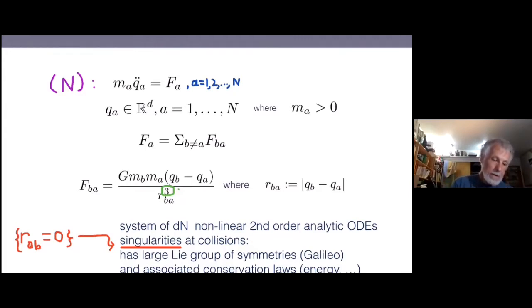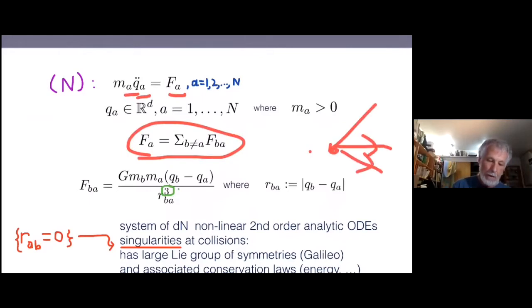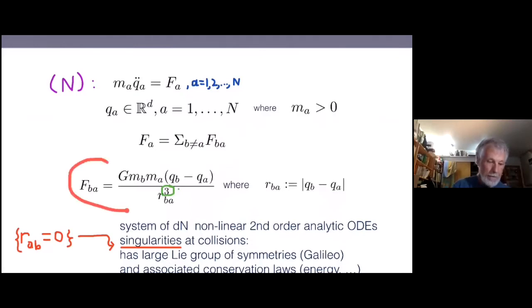Okay, so here are the equations. And this is also telling you my notation. I have positions of masses QA and they're in RD. Typically we're interested in D is two and three. Turns out to be very interesting to take D equal to four also. Mass times the acceleration is the force. The force on body A is the force of all the other bodies. So if here's A, then B and C and D are all pulling it.